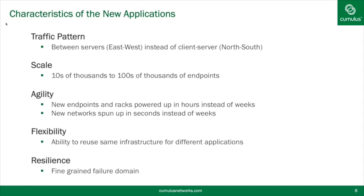People also want flexibility — a port is a port, a subnet is a subnet, and they want that subnet wherever there's a free port or free compute available in their data center. They want to run disparate applications on the same generic infrastructure rather than dedicating different networks for different applications. Finally, these new applications have resilience built in: fine-grained failure domains, and instead of saying the network won't fail, the applications say we will handle resilience ourselves.